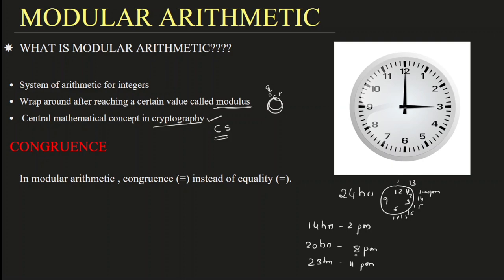What are we doing here? We are performing mod 12 operations, because our maximum number is 12. After reaching 12, again it starts from 1, 2, 3, 4 — like this. That is what wrapping around means — wrapping around after reaching a certain value. That certain value is called the modulus. So we are using the modulus 12 operation in the wall clock.